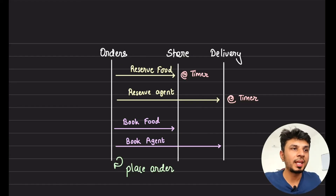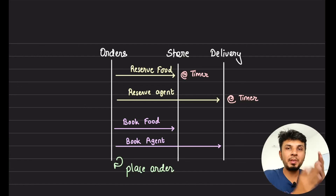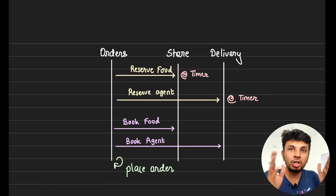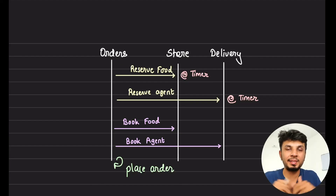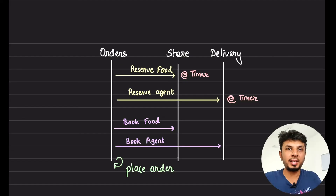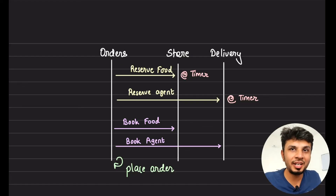That's the theoretical part of two-phase commit protocol. In the next video, we'll simulate this entire environment locally by mimicking order service, store service, and delivery service to see how we can guarantee atomicity across multiple services — including mimicking failures, successes, and timers. If you liked this video, give it a thumbs up, subscribe to the channel, and I'll see you in the next one.